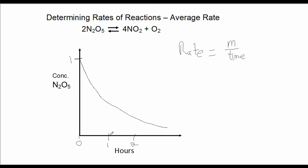And let's just assume that at one hour, the concentration of N2O5 is 0.5 molar. And the concentration at two hours is, let's estimate that to be 0.25.